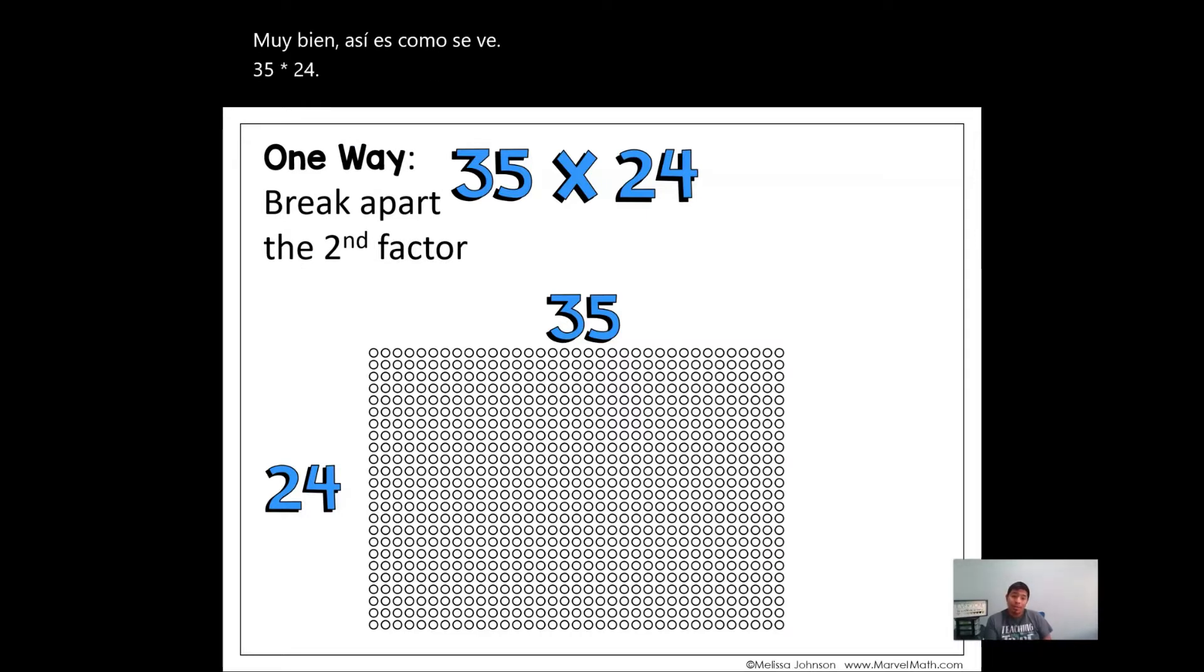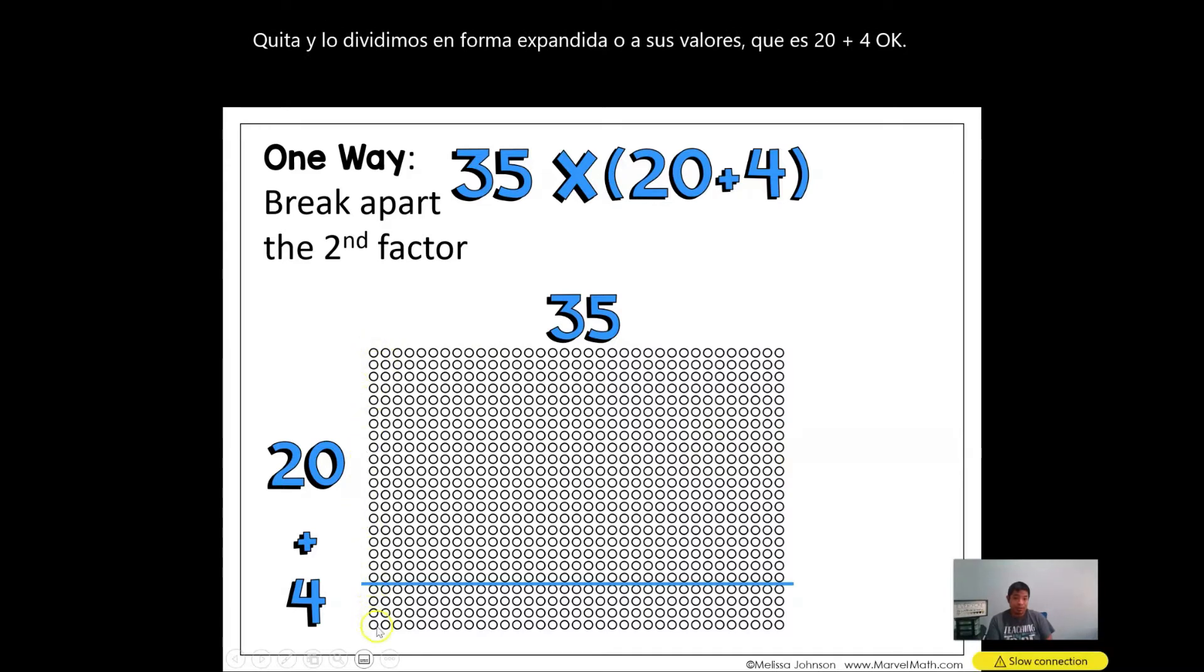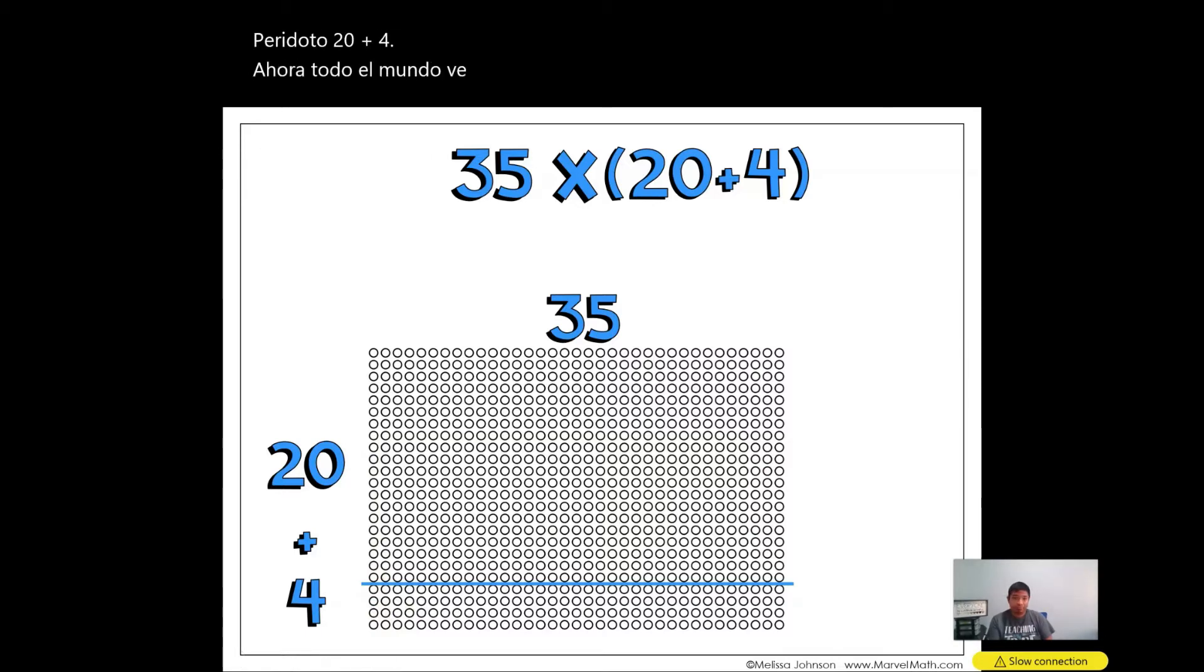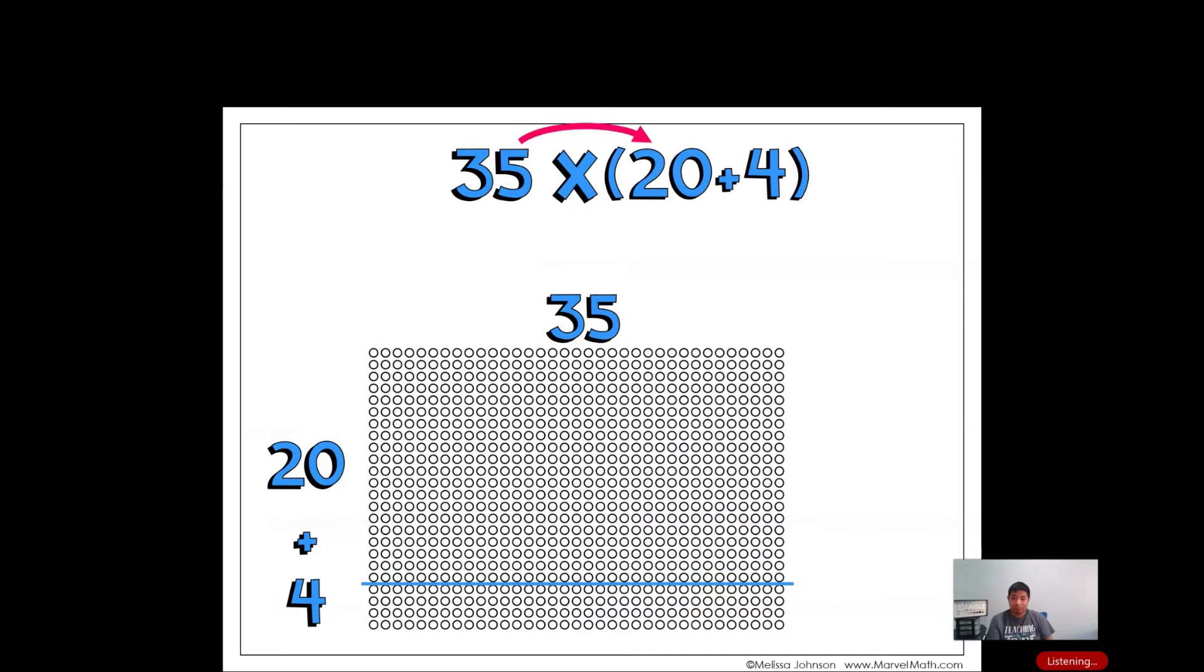One way is to break apart the second factor. So 24 is the second factor. Take it away and we break it into expanded form or to its values, which is 20 plus 4. There we go, 20 plus 4. Now, everybody see that? We have 20 up here. 1, 2, 3, 4 down there.